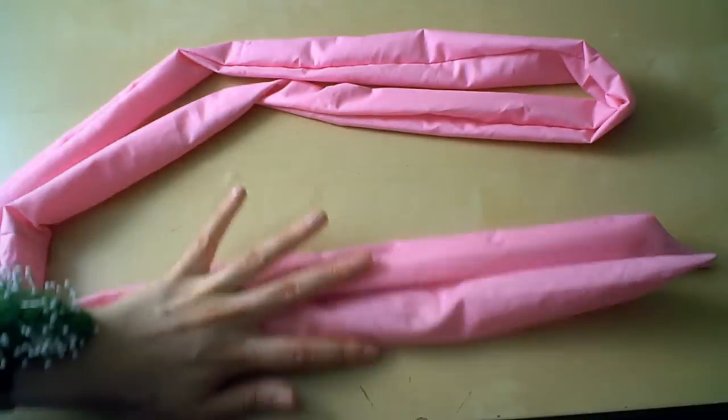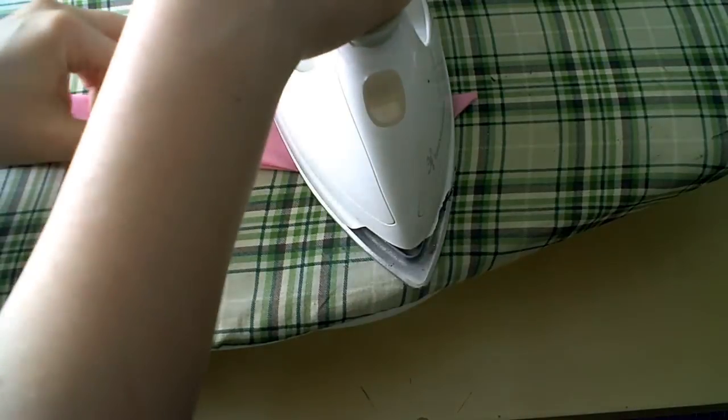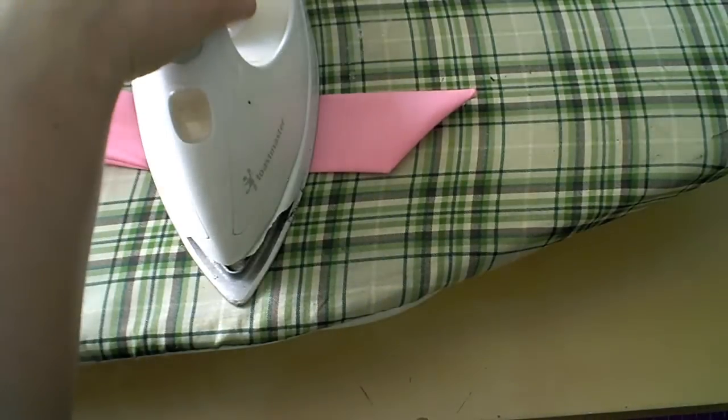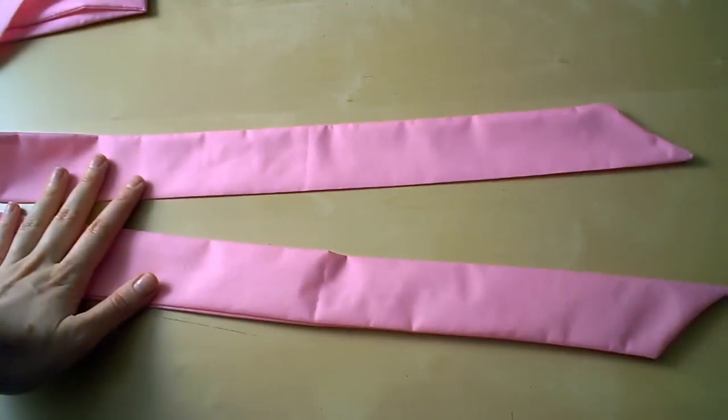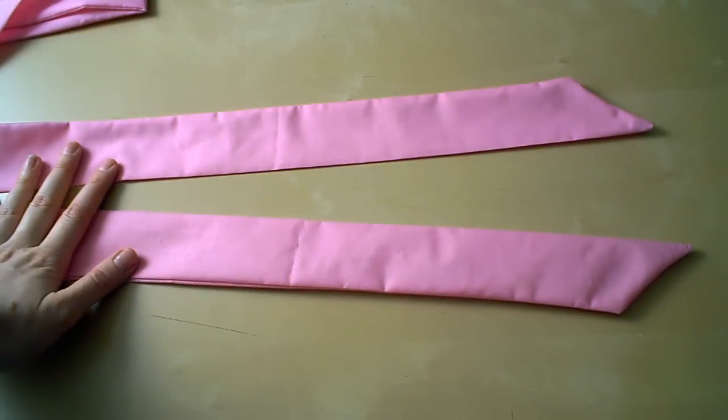Once the whole thing's turned out, it's back to the iron. Take your old beat up piece of crap iron and press that waistband flat. Once you've got that whole bad boy pressed flat, set it aside.